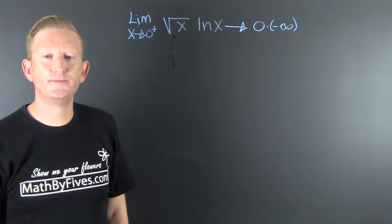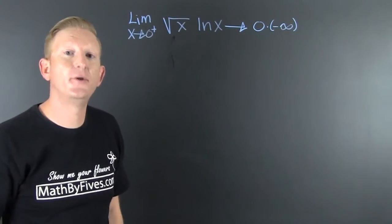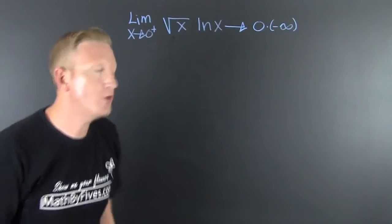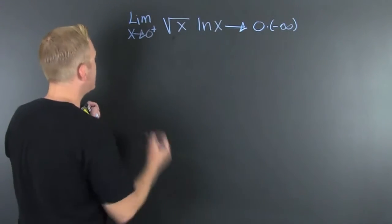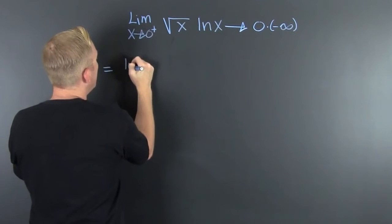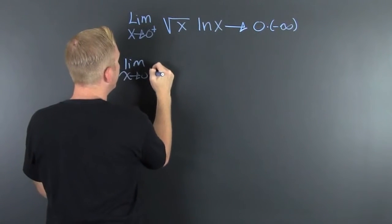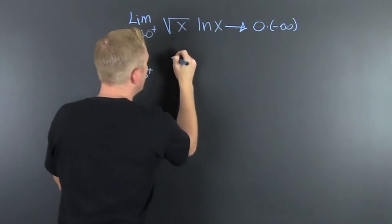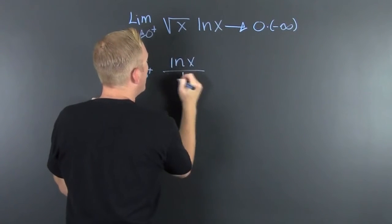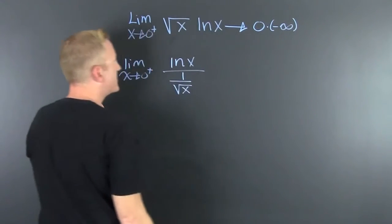That's not L'Hôpital's rule — well, it's not the form, but we can make it of the form if we rewrite it with a quotient. I'm saying that that's the same as the limit as x approaches zero from the right of the natural log of x divided by one over the square root of x.